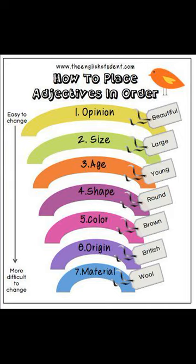A quick and easy way is to always place the adjective that is easiest to change first. Number one, opinion, can be changed more easily than number six, origin — where something is from. It is easy to change your opinion of someone, but not easy to change where they come from. Therefore, place the opinion adjective first.